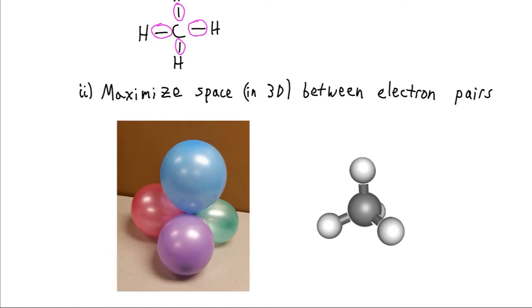So here I've taken some balloons, and I have just taped them together. And just like electrons, balloons cannot occupy the same space. Actually, that's because of their electrons. And just like our electrons, they are affixed to some central point, like the nucleus. So they maximize their space around the nucleus, and we get this shape here.